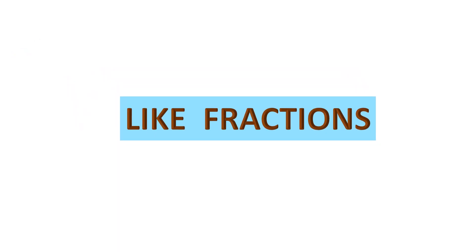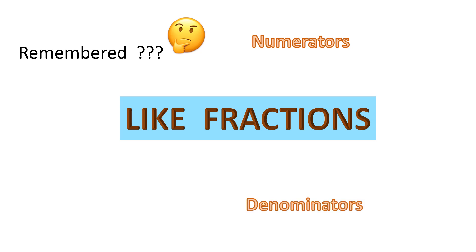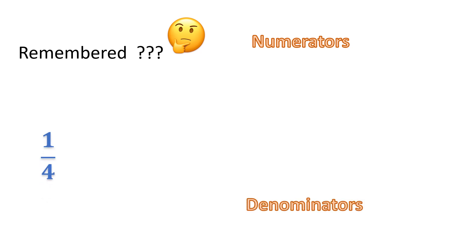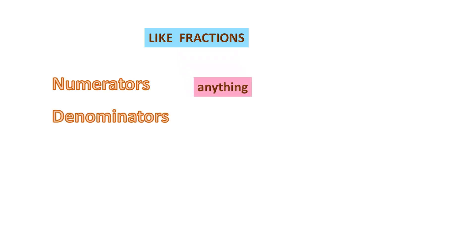What are like fractions? Remember about the numerators and the denominators. For example, take the fraction 1 over 4. Here, 1 is the numerator at the top of the fraction and 4 is the denominator at the bottom. When we talk about like fractions, we take 2 or more fractions where the numerators can be anything, but the denominators have to be the same.